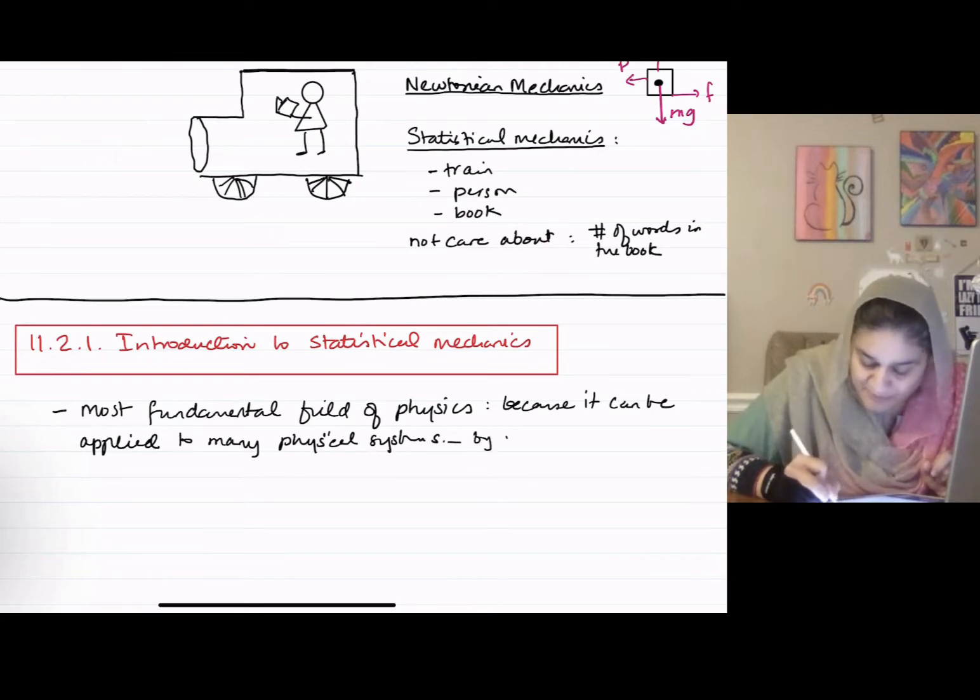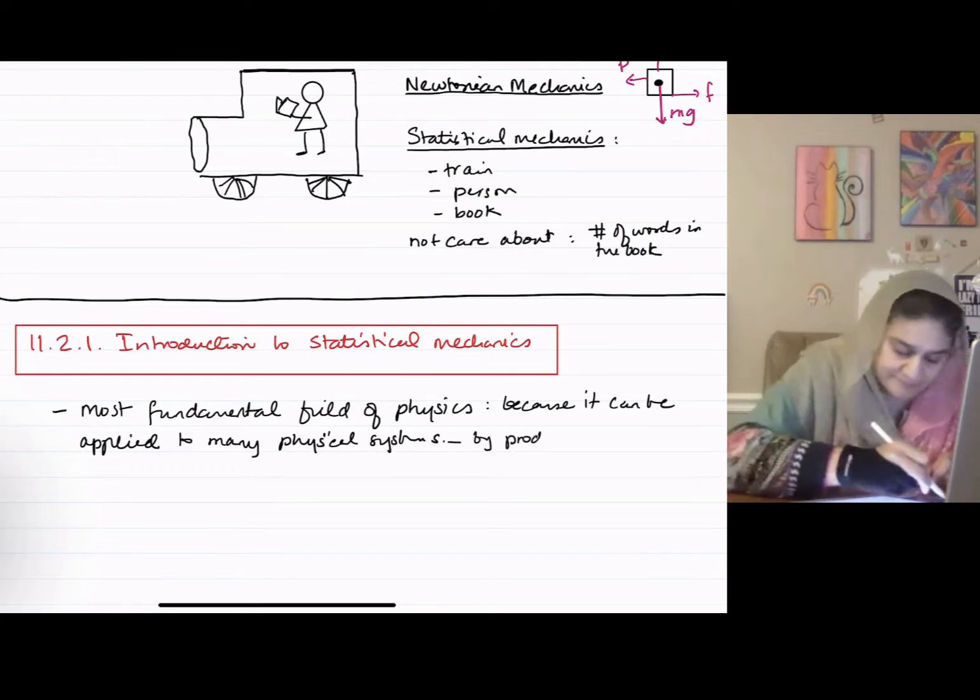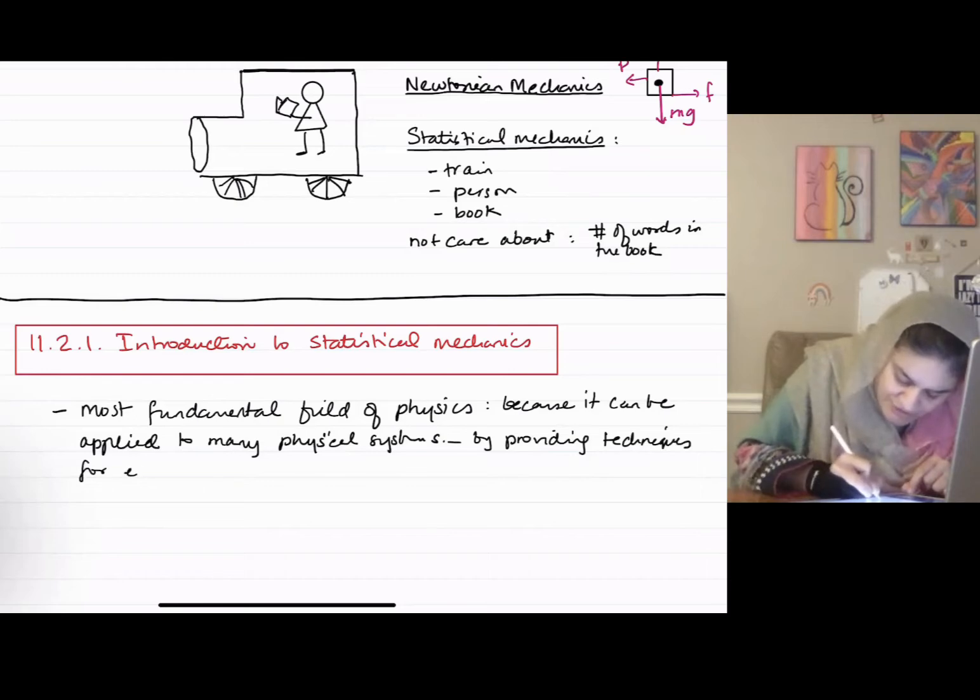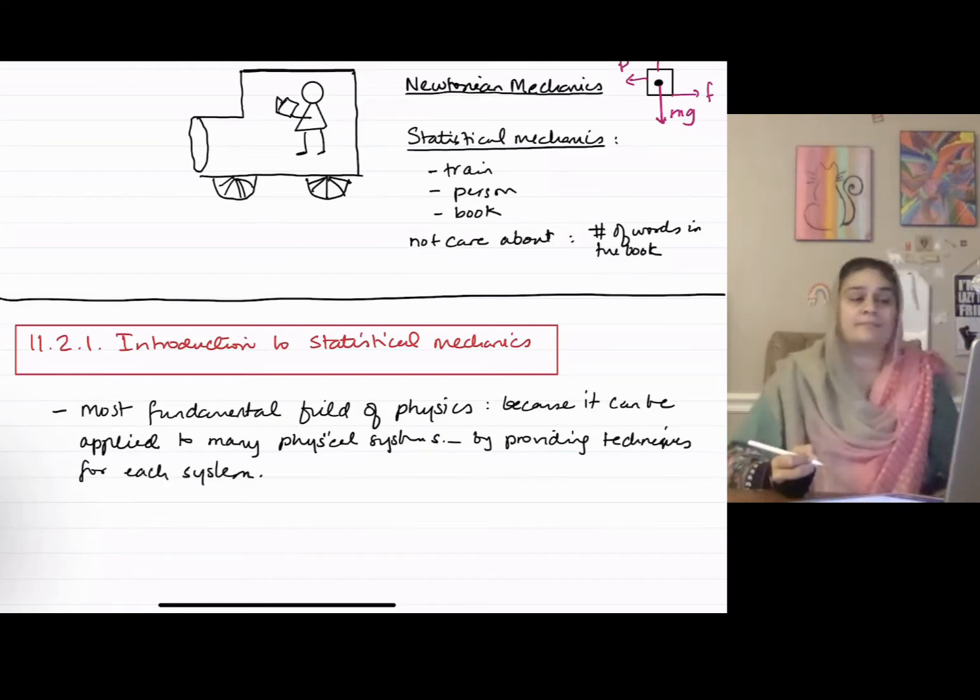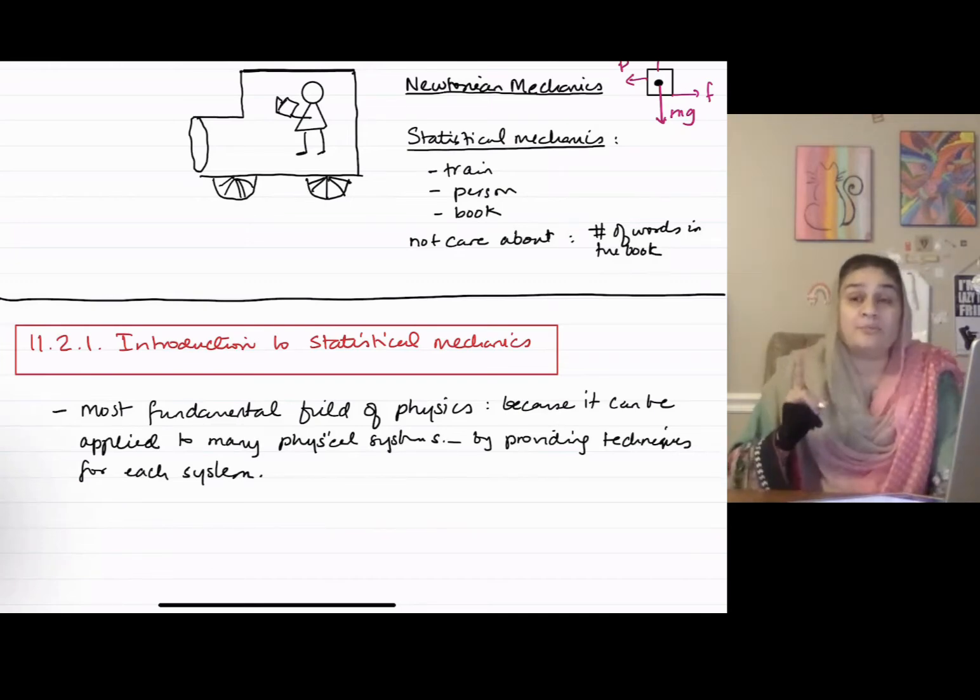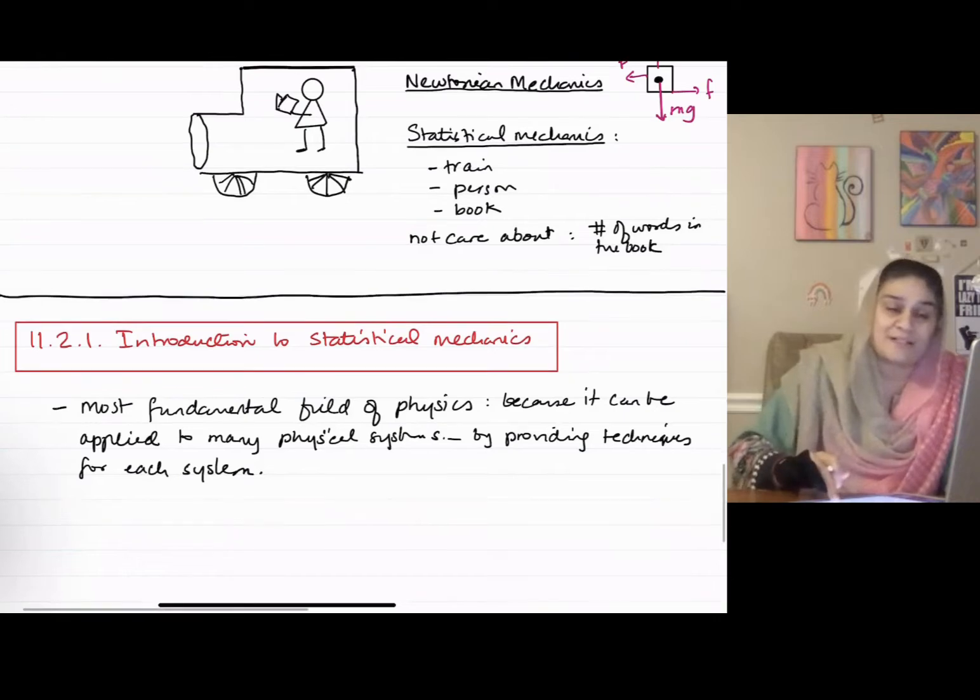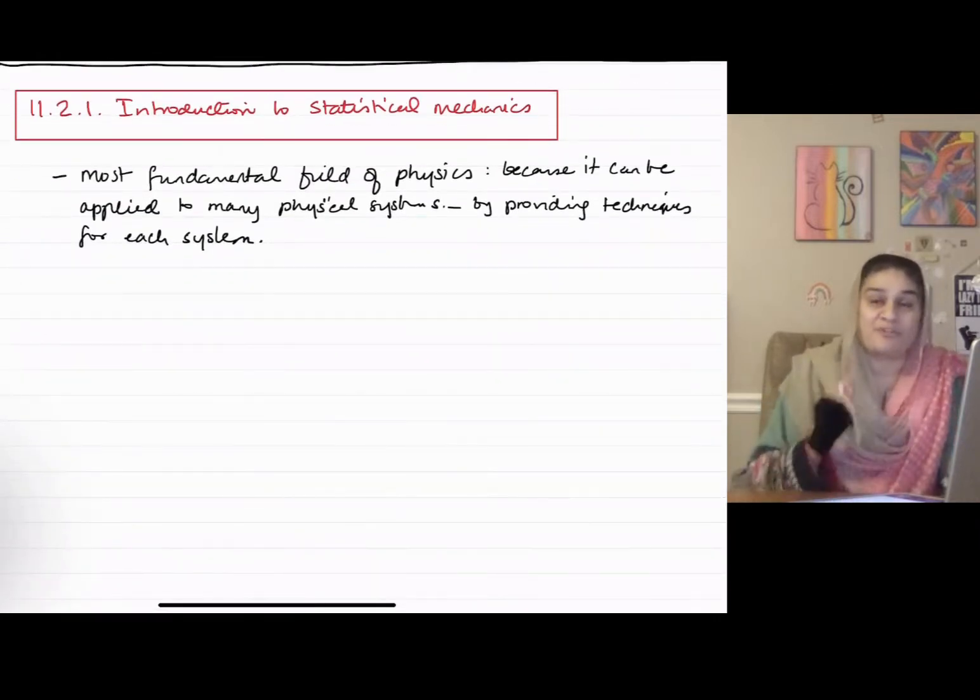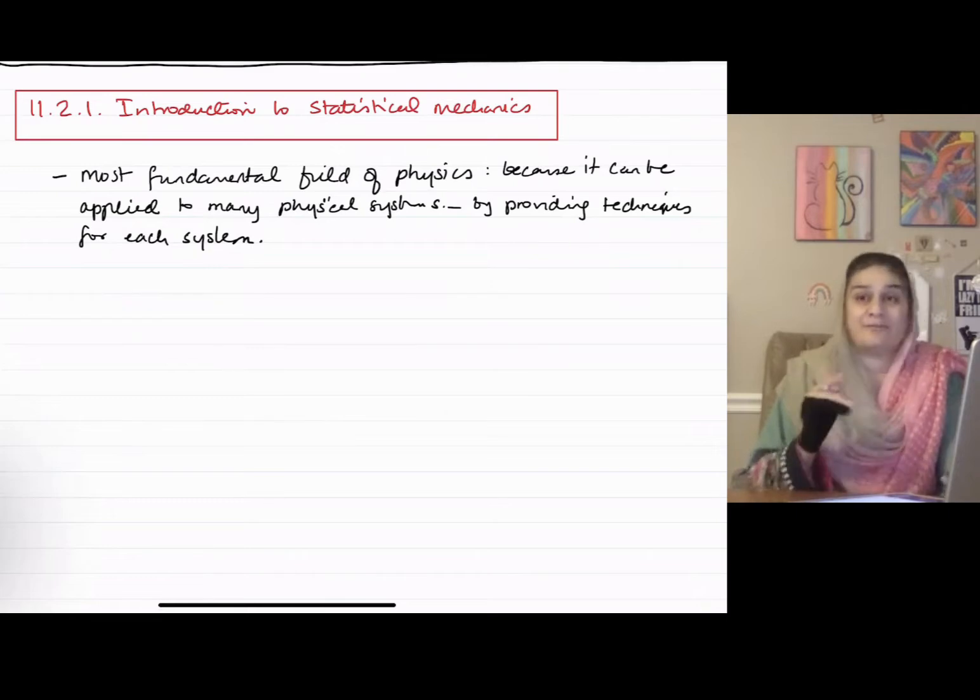By providing techniques for each system. Very important note, statistical mechanics does not provide any laws like F equals MA or the Schrodinger's equation that we were talking about.